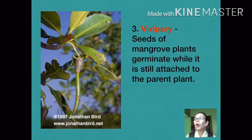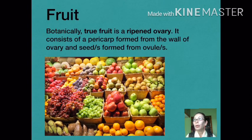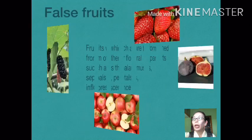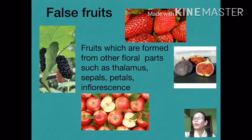Angiosperms are the only plants which have seeds enclosed in a fruit. Botanically, a true fruit is a ripened ovary. In some cases, fruits are formed from other parts of the flower such as the thalamus, sepals, petals, or even the inflorescence — such fruits are called false fruits. For example, apple, strawberry, and cashew are examples of false fruits, as these are formed from the thalamus.